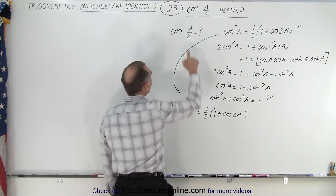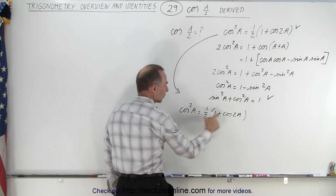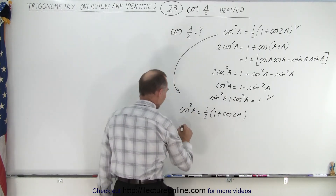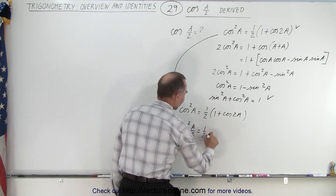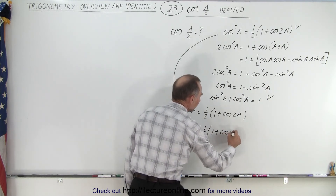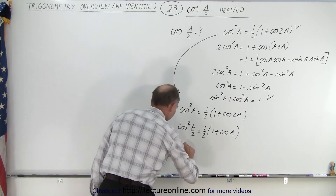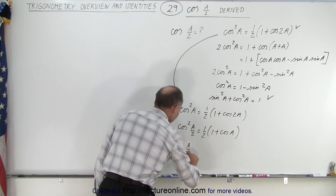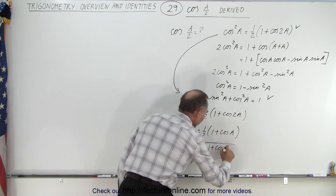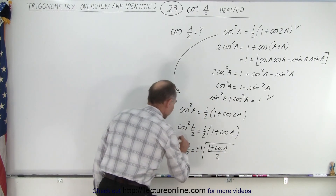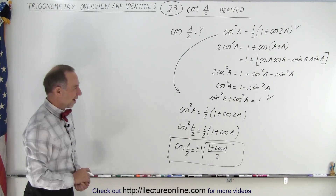Now since we want the cosine of a half angle, we're going to divide this angle by two. If we divide this angle by two we must divide that angle by two as well. So the cosine square of A over two is equal to one half times one plus the cosine of a single angle A. Taking the square root of both sides, the cosine of A over two is equal to plus or minus the square root of one plus the cosine of A, divided by two. That is the identity for the cosine of a half angle, and that is how it's derived.